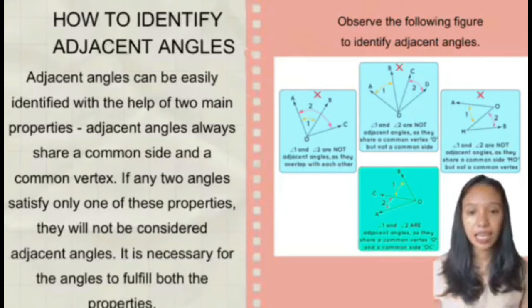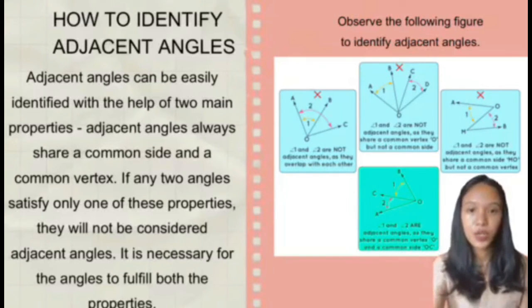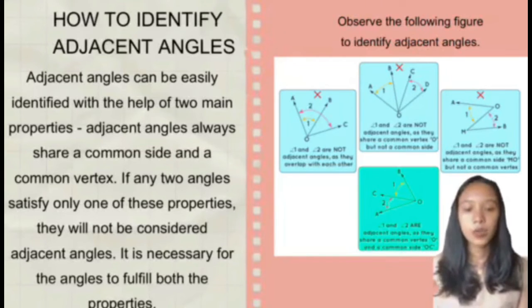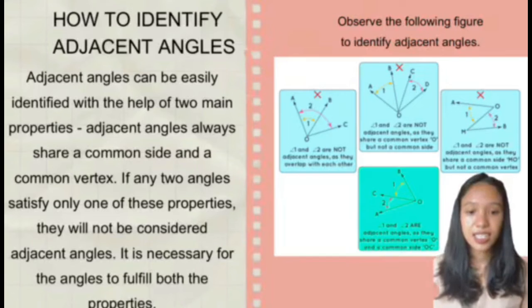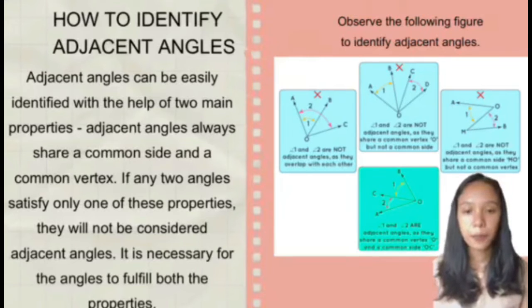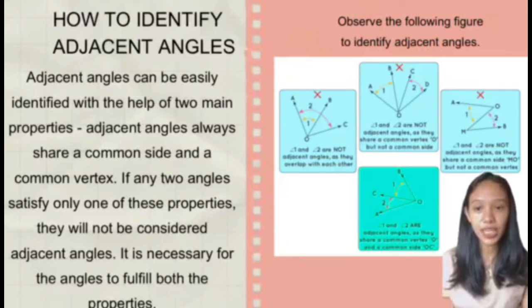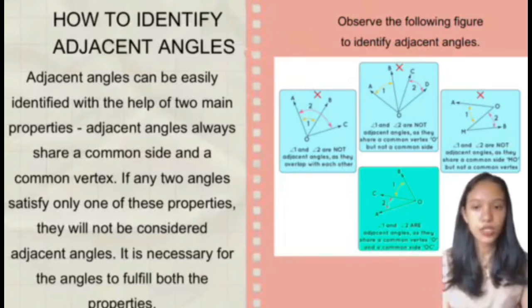Angle AOB, which is angle one, is far from angle two, which is angle COD. Figure three shows that angle 1 and angle 2 are not adjacent angles as they share a common side MO but not a common vertex — there are two vertices, O and M, but adjacent angles must share a common vertex. Lastly, angle 1 and angle 2 are adjacent angles as they share a common vertex O and a common side OC, where angle one is angle BOC and angle two is COA.